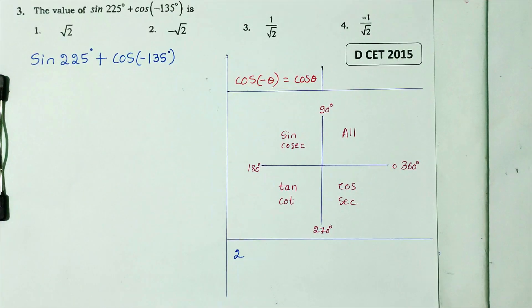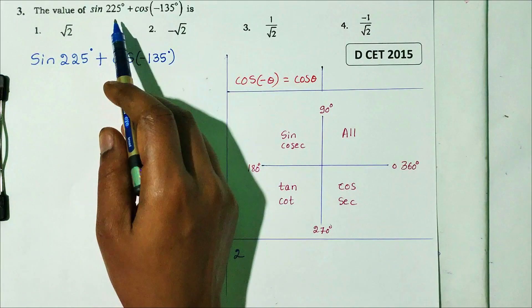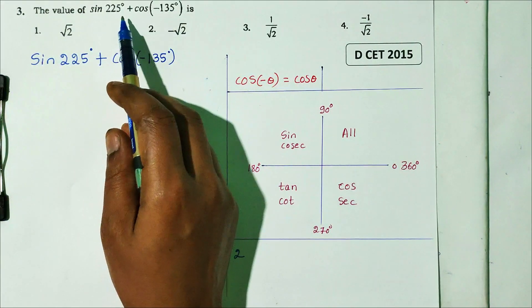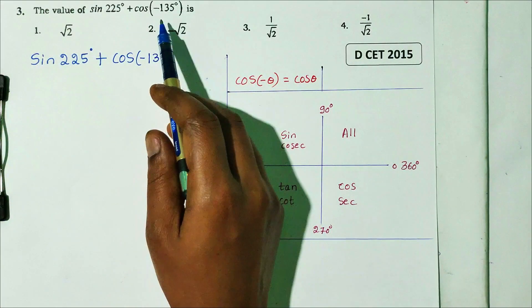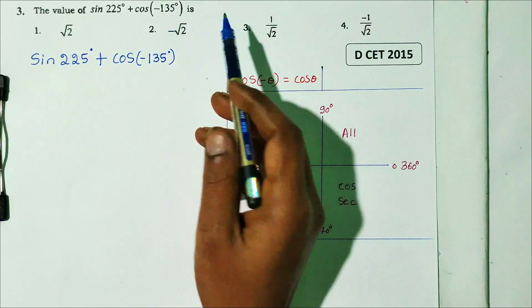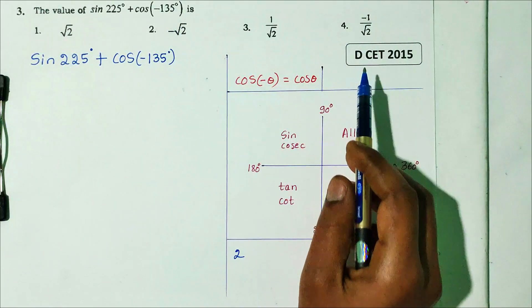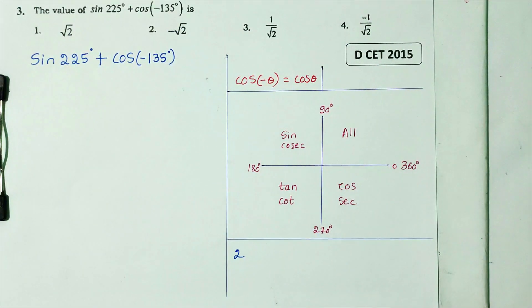Question number 3: find the value of sin225 plus cos(minus 135). This is from DCT 2015, with 4 options.